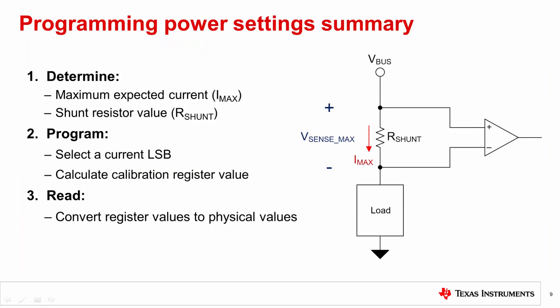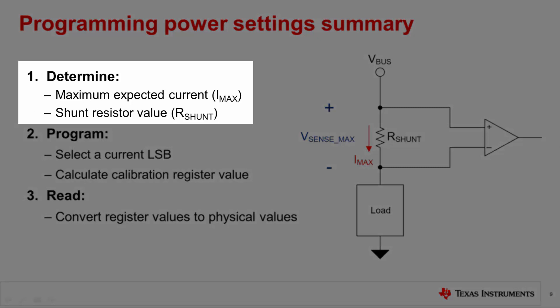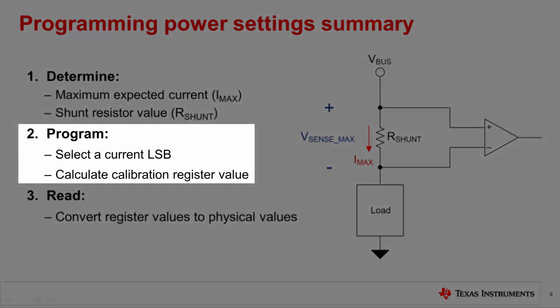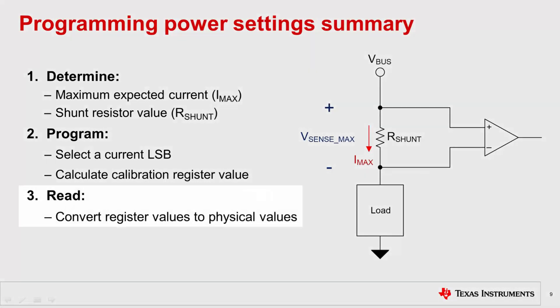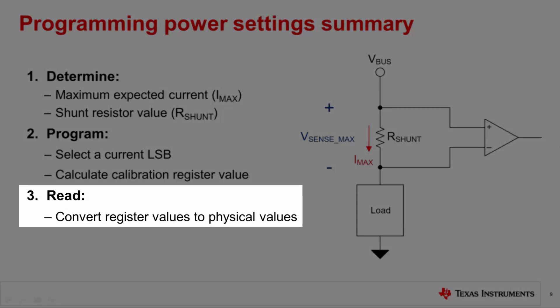Let's take a minute to summarize what we've learned in this video. Taking advantage of TI's digital power monitors is a simple three-step process: determine, program, and read. Step 1: determine the system requirement — find out the maximum expected current and which shunt resistor to use. Step 2: calculate the current LSB and select the smallest whole integer larger than the calculated value; this provides the best compromise among resolution, accuracy, and ease of calculation. Step 3: read the register values, taking into account bit shifting and byte order when applicable. Multiplying the register value with its LSB gives us the physical value we are looking for.